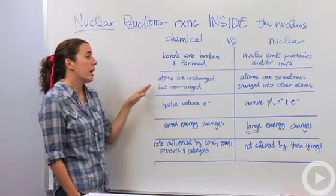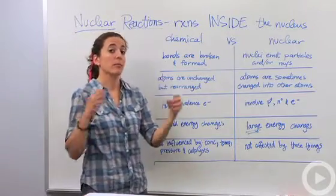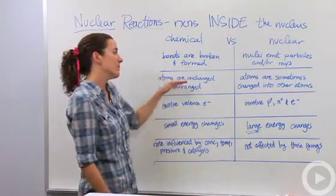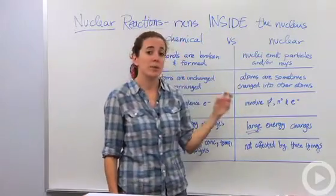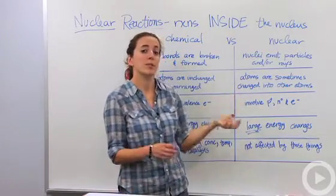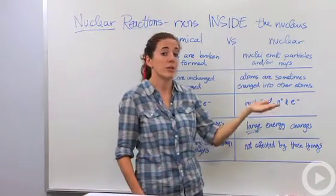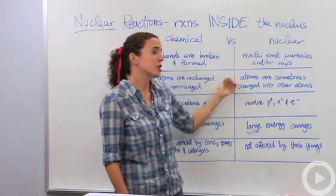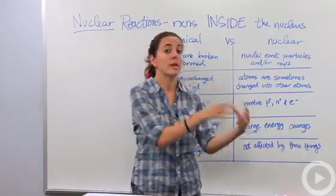In a chemical reaction atoms are unchanged but rearranged. So they may be breaking and rearranging in other ways, but the atoms themselves are unchanged. Whereas in nuclear reactions, because we're changing the composition of the nucleus, we might be changing the number of protons. If we change the number of protons, we know that the number of protons is unique for each atom. So if we're going to change the number of protons in there, we're actually going to change from one type of atom to another type of atom.